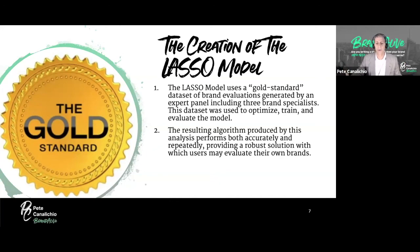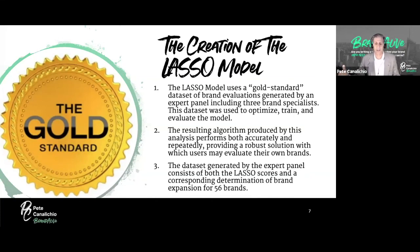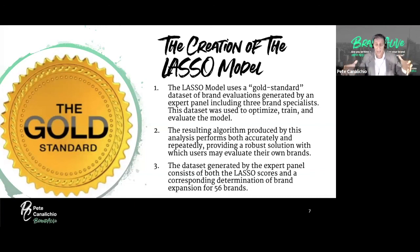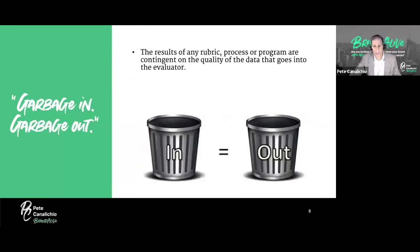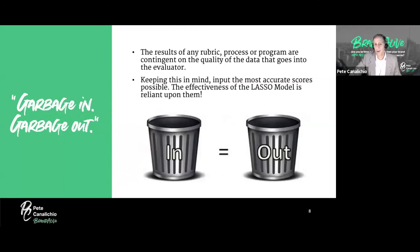The resulting algorithm performs both accurately and repeatedly, which is really important, providing a robust solution with which users may evaluate their own brands. The data set consists of both LASSO scores and a corresponding determination of brand expansion for 56 brands — those 56 brands allowed us to build the LASSO model. We used machine learning in the algorithm, and we actually used multiple models. The bigger model looks at the multiple models and chooses the best selection for each individual.